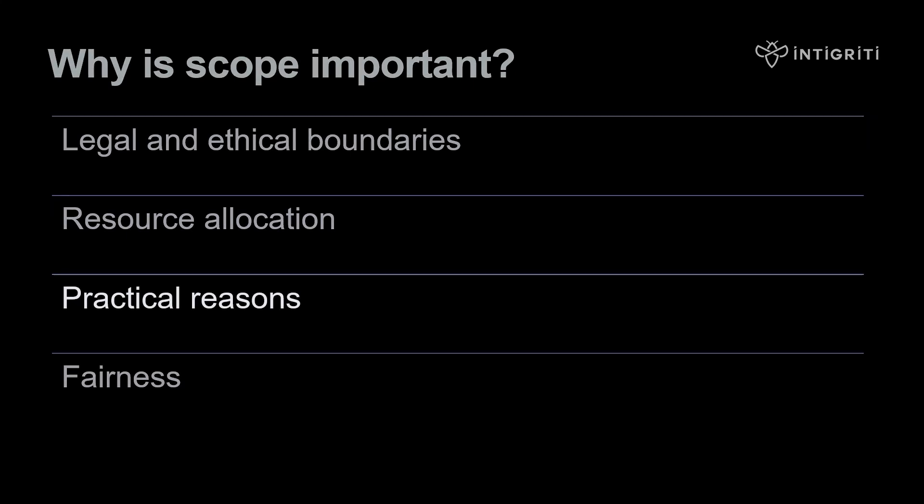There are also practical reasons. Some systems are very sensitive to being tested — for example, critical infrastructure — and we don't want unaware product teams being bombarded with payloads or unsolicited scans that might result in accidental denial of service. And finally, fairness: focusing on assets that are out of scope and therefore less tested provides an unfair advantage to some bug bounty hunters. We want to make sure that people who respect the scope don't miss out on potential bounties.